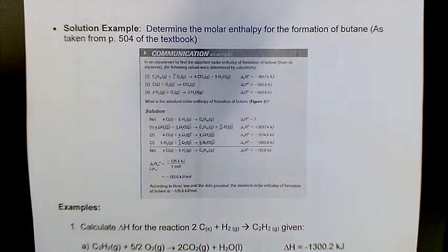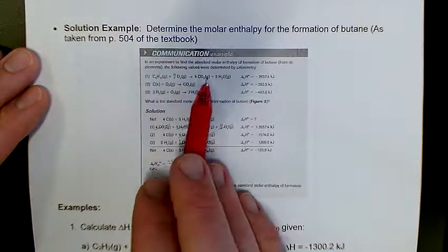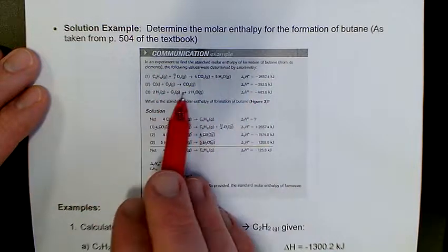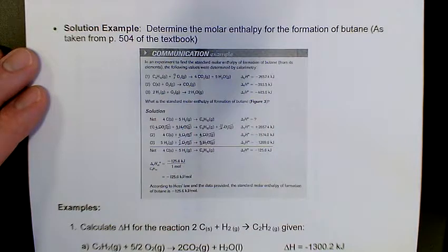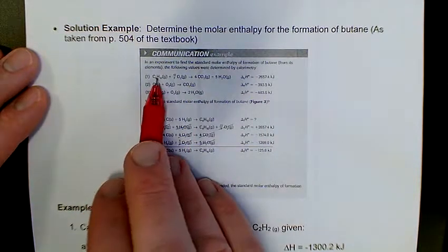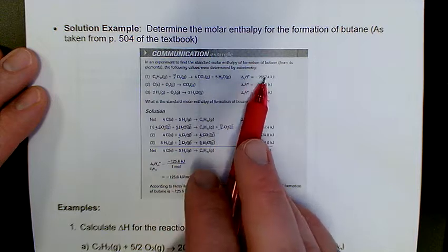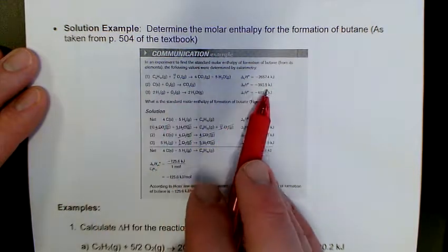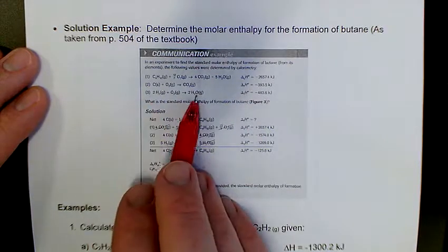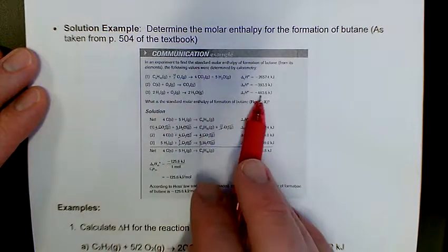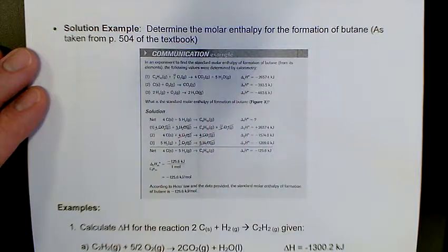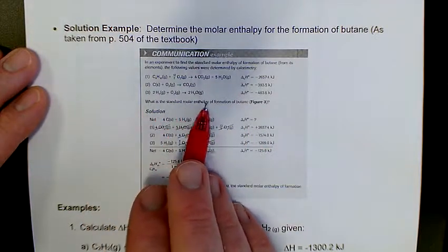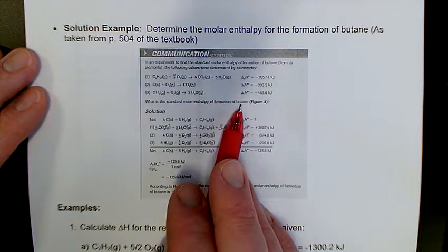This example for us is given on page 504. In this one, we have three different equations that we're looking at with three different enthalpies. We have the combustion of butane reaction with lots of energy released, the formation of carbon dioxide with almost 400 kilojoules released, and the formation of water vapor which gives off a lot of energy as well. It says, what is the standard molar enthalpy for the formation of butane?